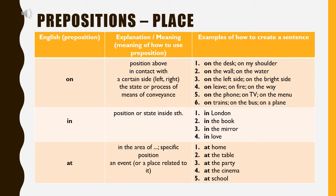Prepositions of place: the word 'on' is used to refer to a position above or in contact with a surface — for example: on the desk, on my shoulder, on the water, on the left side, on the right side, on fire, on the way, on the pond, on TV, on the menu, on the train, on the bus, on a plane.